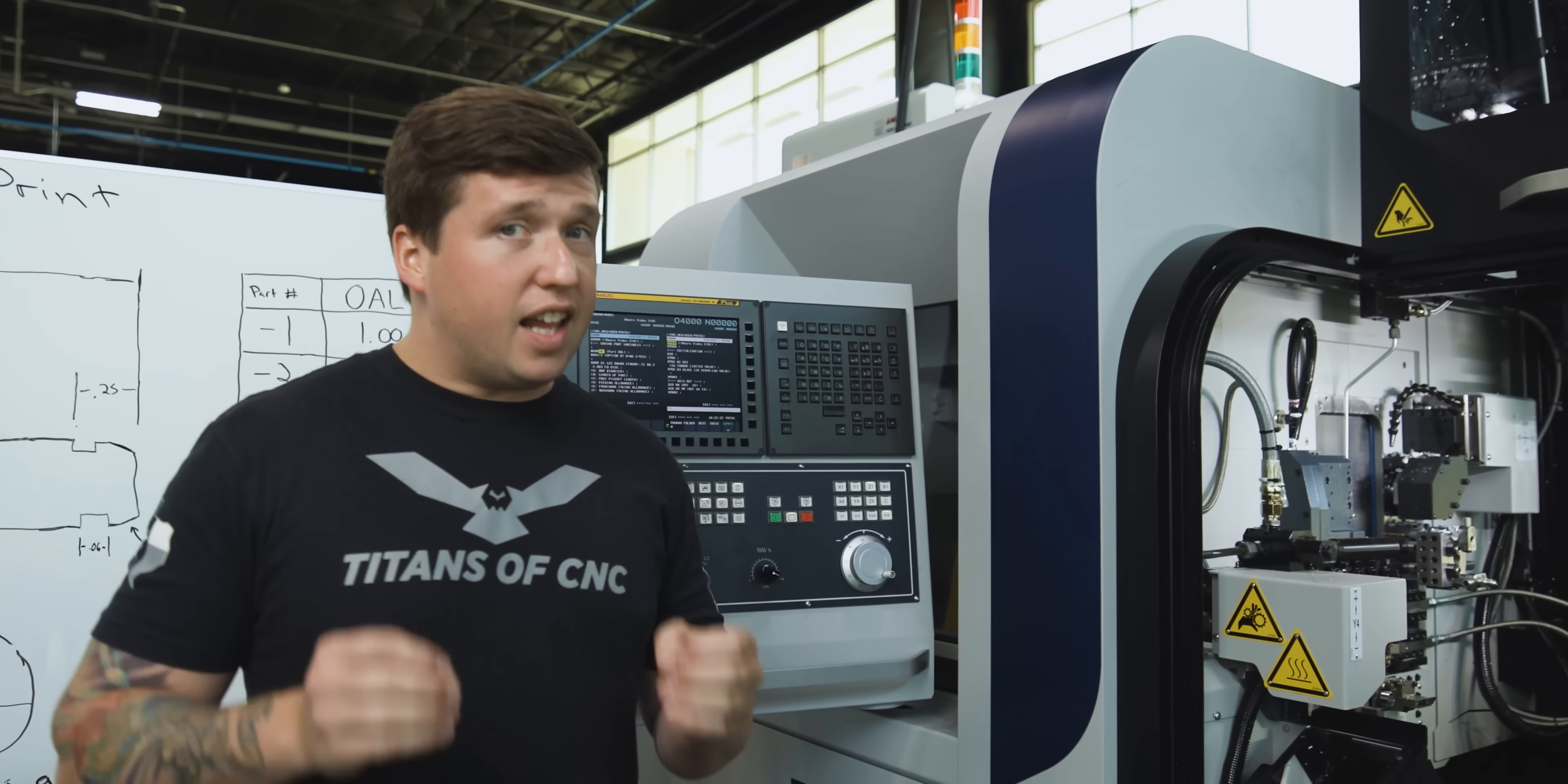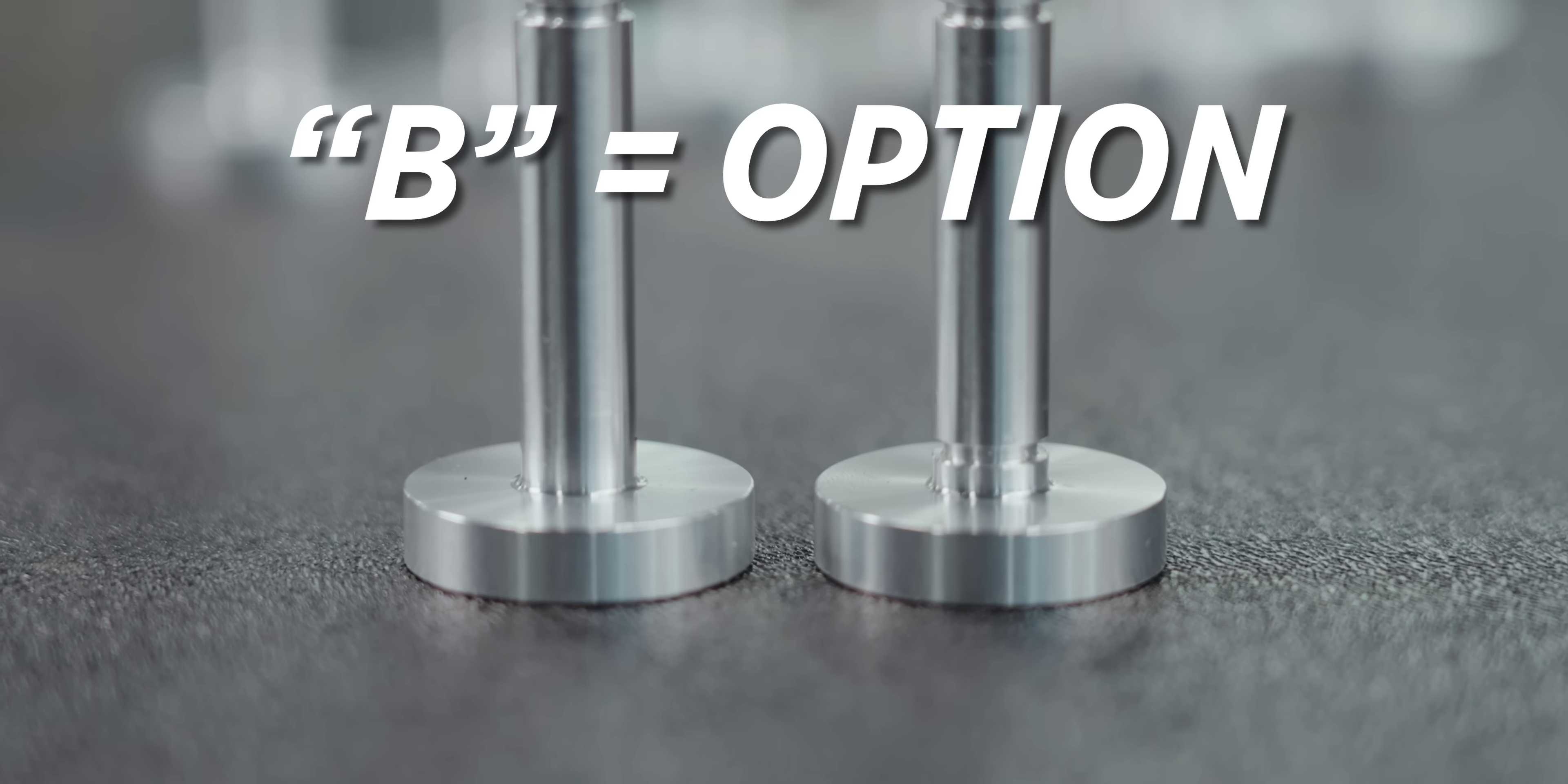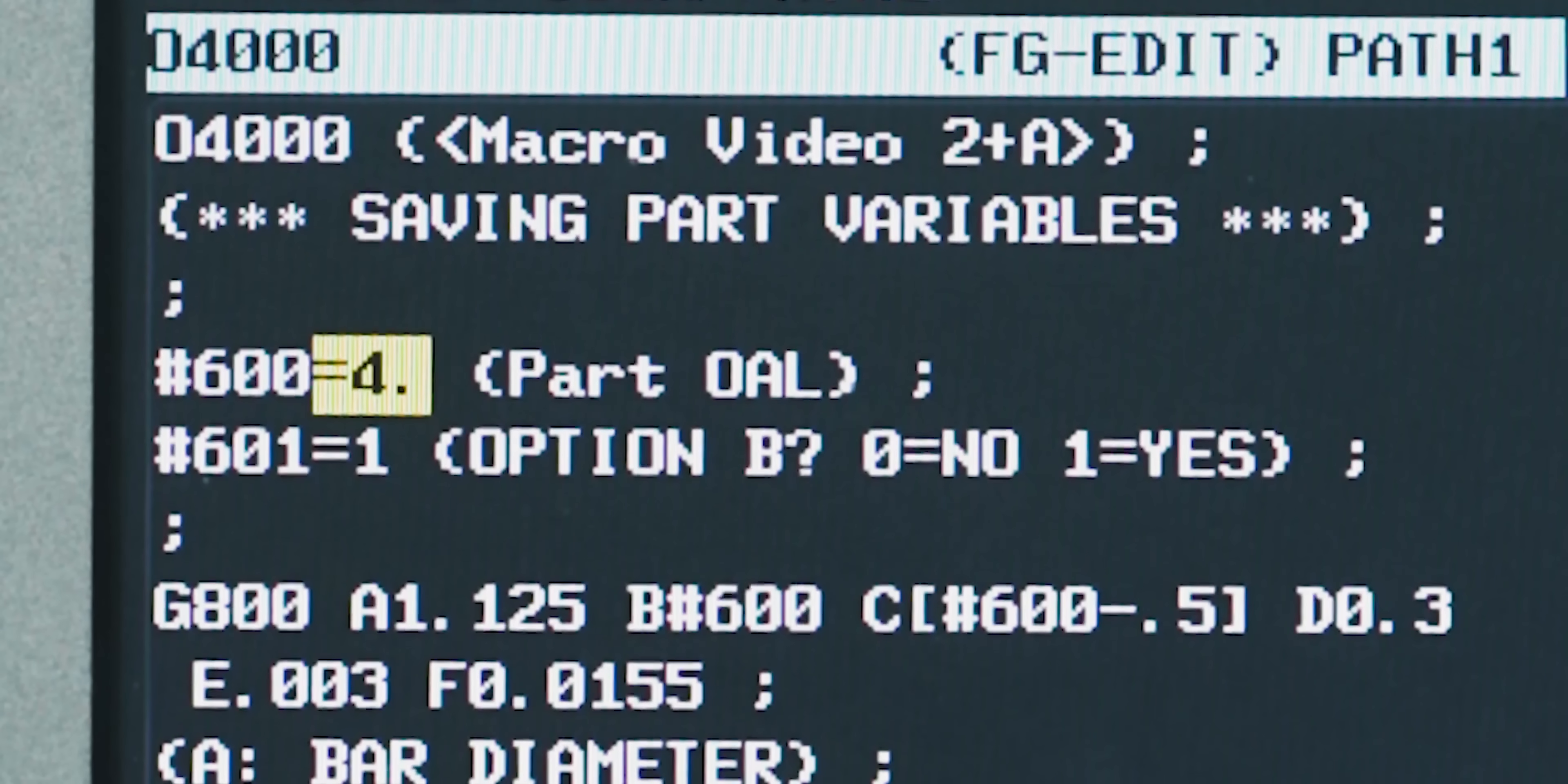The first thing when writing any macro is to put in what you know. In this case we only have two variables. We have our length and an option. Here I put pound 600 as my length - you could type in any overall length you want. Underneath I put pound 601 as our option. I also wrote notes there so you can see: zero is a no, one is a yes.